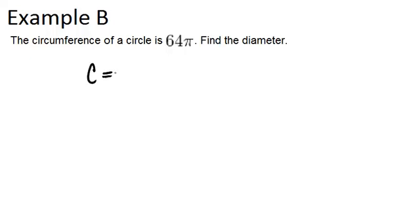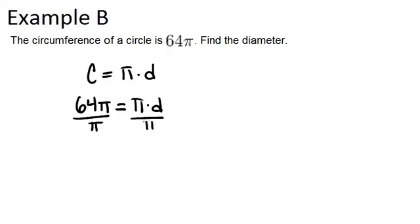Remember that circumference is pi times diameter. So if we know that the circumference is 64 pi, then we have 64 pi equals pi times diameter. We can divide both sides by pi, because pi is just a number.